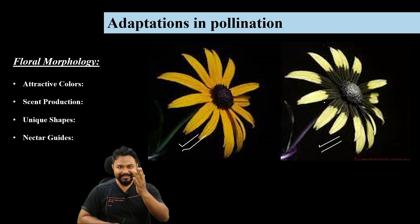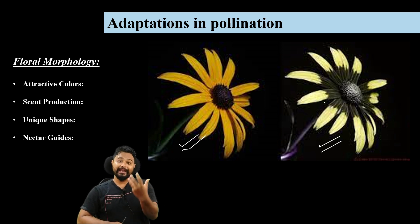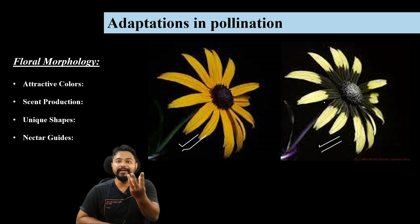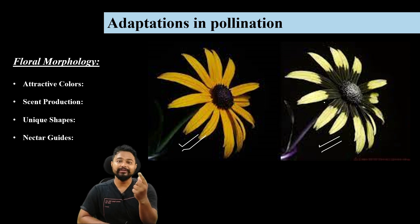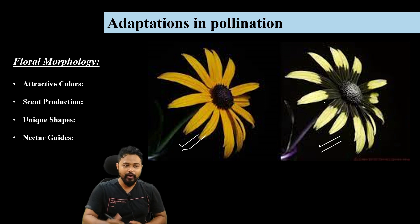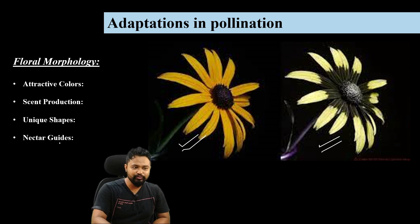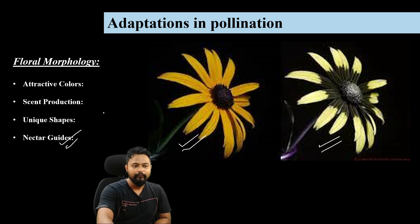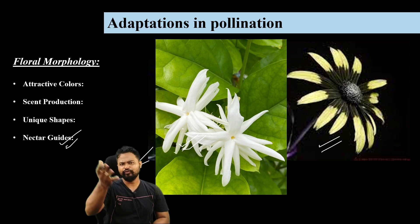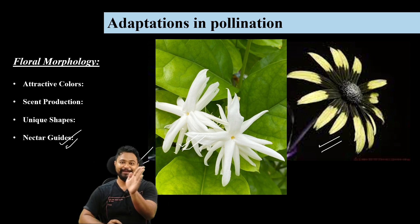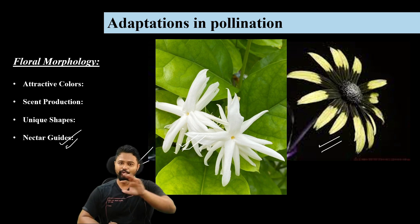The idea is that the flower will adapt and modify according to the pollinators which are around the area. So nectar guides, floral morphology, and scent are all key adaptations.